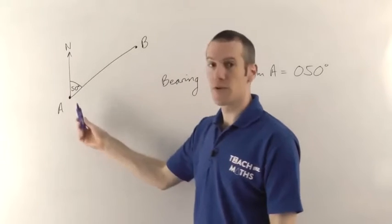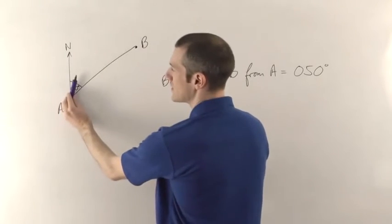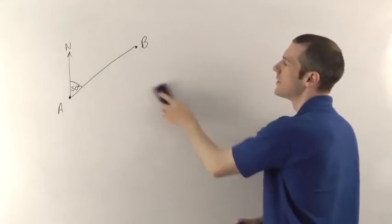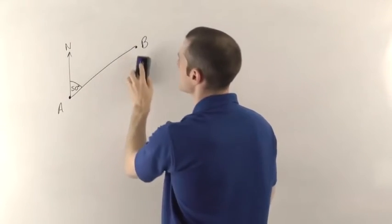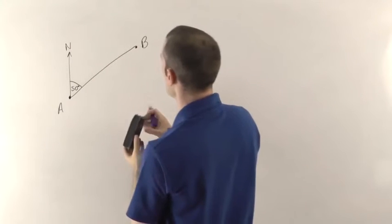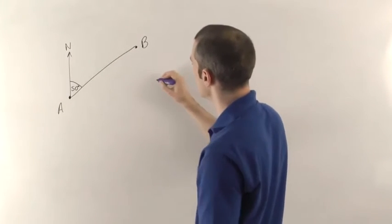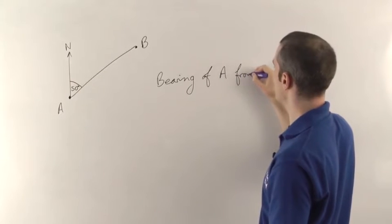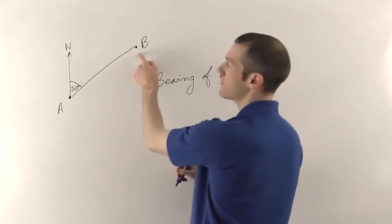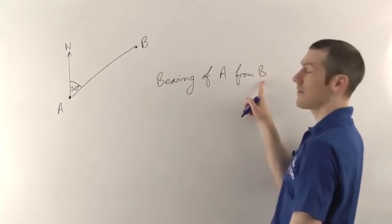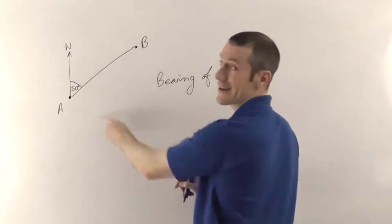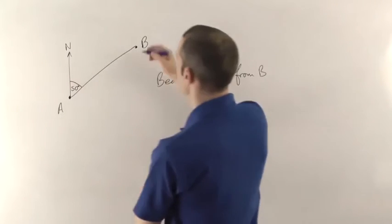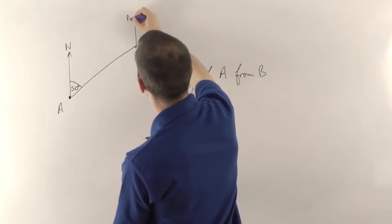If I give you a different example - in fact if we leave those there, but we can leave the angle there as well - let me just change the way I asked the question. So we're going to say we want the bearing this time of A from B. So instead of starting here and going to B, we're going to start from B. 'From B' is the important bit - you need to spot first. And we're going to go to A. So if you're starting from B, you need a north line at B, and if there isn't one you've got to draw it in. So that's the first thing - draw a line straight up. That's going to be your north line.